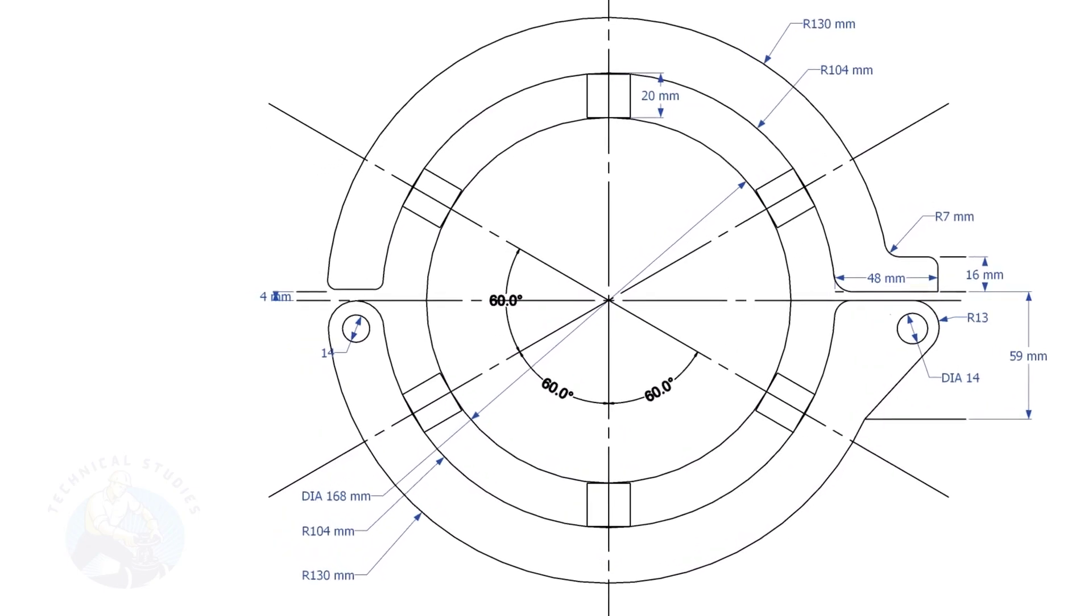This layout is for a 6-inch diameter pipe clamp. Draw the center lines and draw a circle of diameter 168 millimeters, that is the OD of the 6-inch pipe.